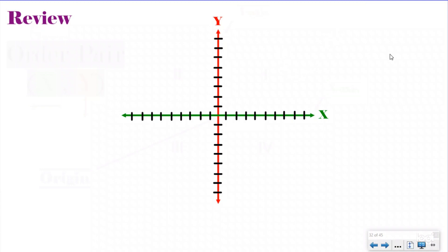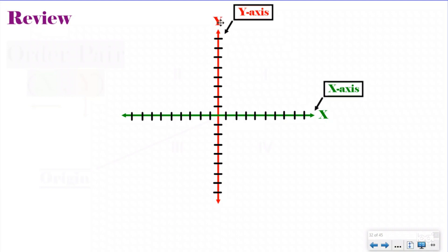Our coordinate plane is a two-dimensional plane made of two different number lines — one vertical, one horizontal. The horizontal one is called the x-axis and the vertical one is called the y-axis. The way I remember that is a 'y' goes up and down, so that's the vertical one, and the other one has to be the x. Our two number lines split this coordinate plane into four quadrants, which are kind of like our four neighborhoods. We've been spending all our time so far in the first quadrant.